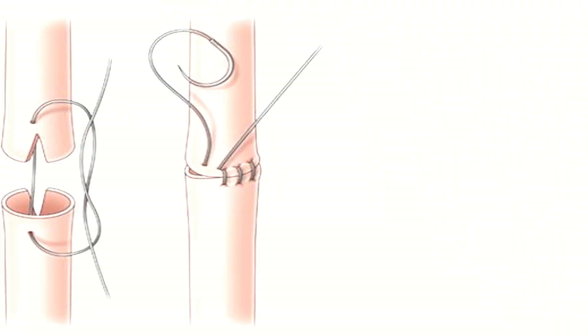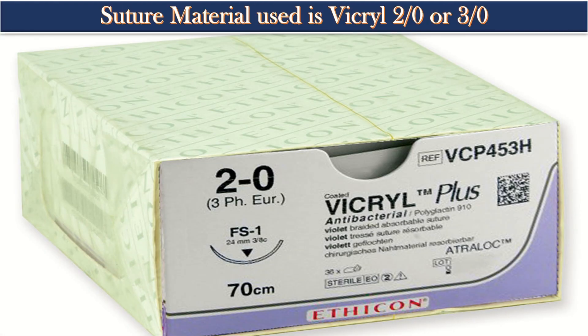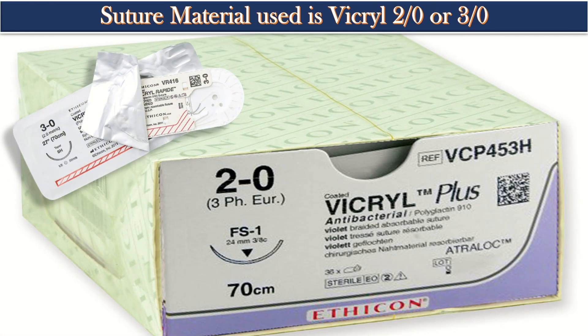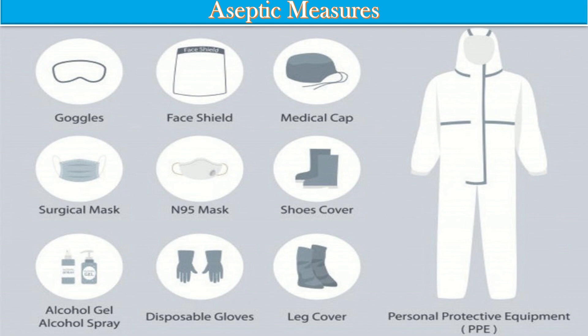The suture material used for end-to-end anastomosis is Vicryl 2-0 or 3-0. It is a delayed absorbable suture, maintains potency, and is suitable for fine surgery. Aseptic measures should be taken: sterile cap, mask, and closed shoes, followed by gowning and gloving using appropriate technique.